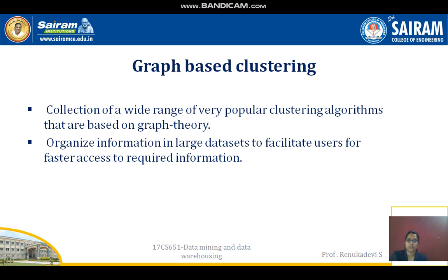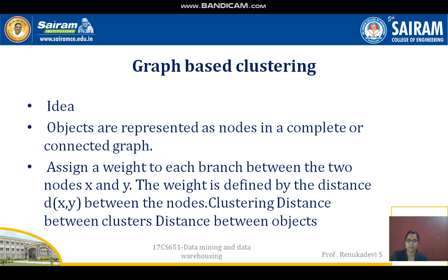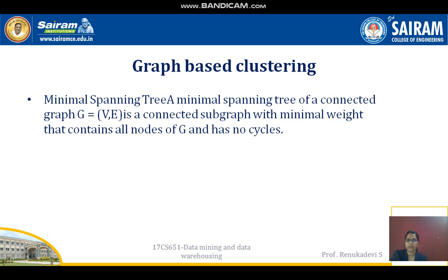This is a collection of a wide range of popular clustering algorithms based on graph theory, which organize information in large data sets to facilitate faster access to required information. The idea behind it is that objects are represented as nodes in a complete or connected graph, and a weight is assigned to each edge between two nodes X and Y, where the weight is defined by the distance between the nodes. A minimal spanning tree of a connected graph is a connected subgraph with minimal weight that contains all nodes of the graph and has no cycles. The next topic, clustering evaluation, will be discussed in the next video.